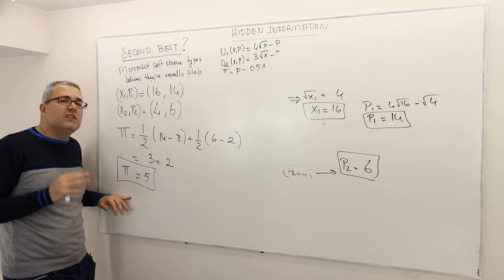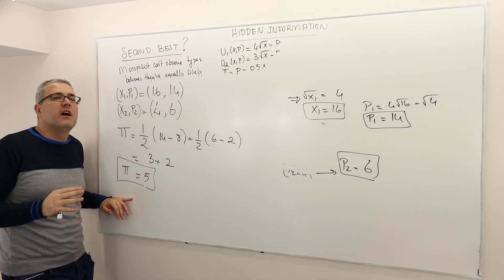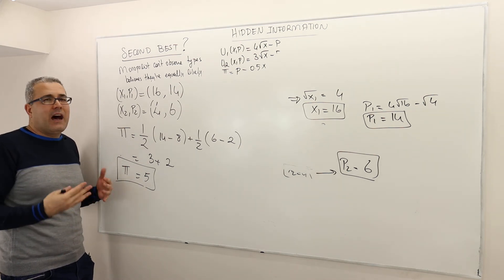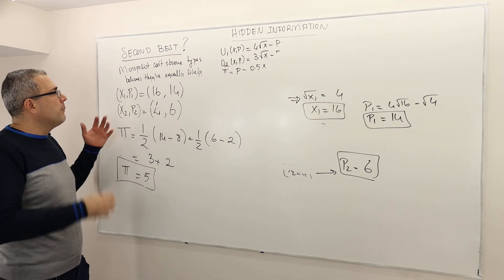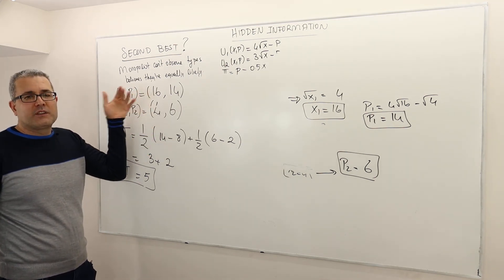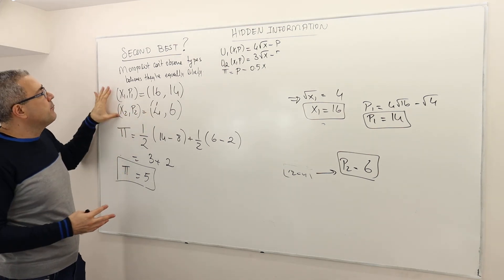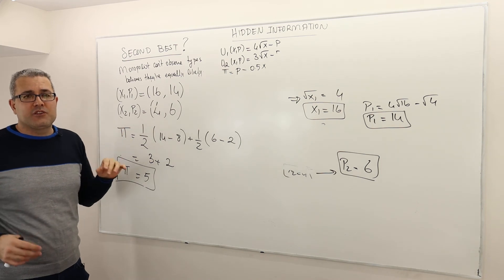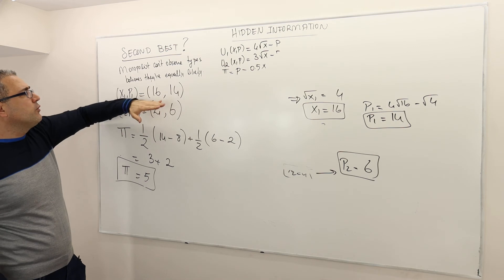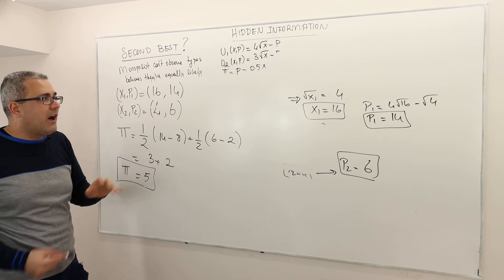The second best is the highest profit the monopolist can achieve under asymmetric information, achieved by offering two packages: one intended for type 1 customers and one intended for type 2 customers.